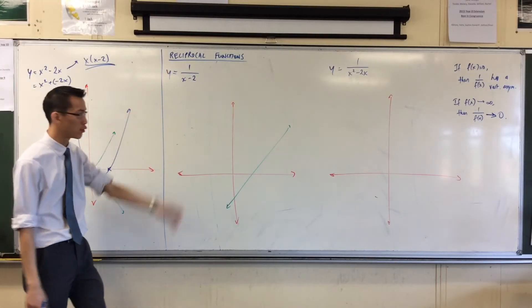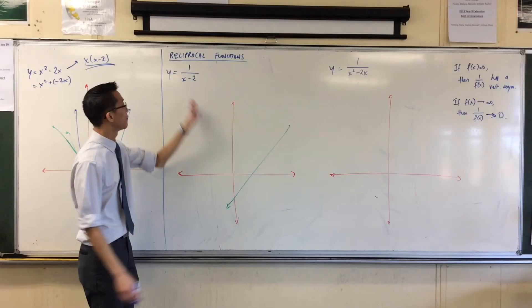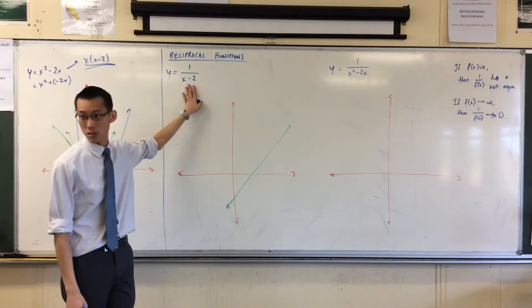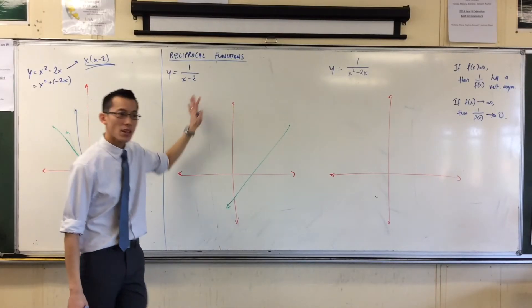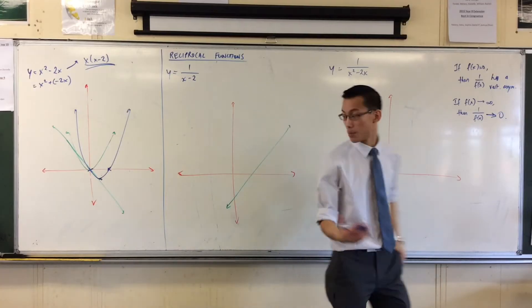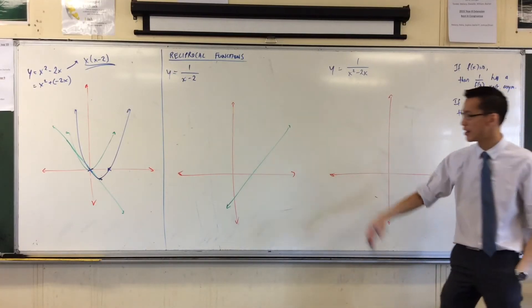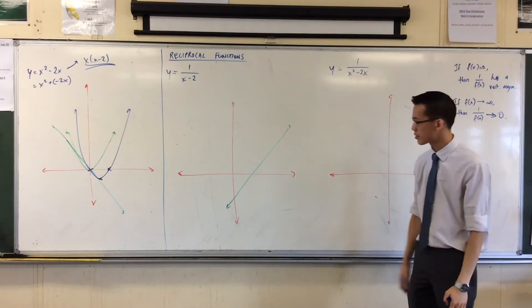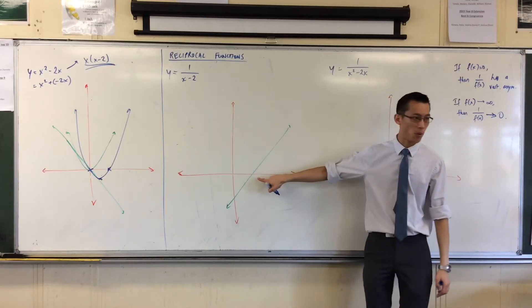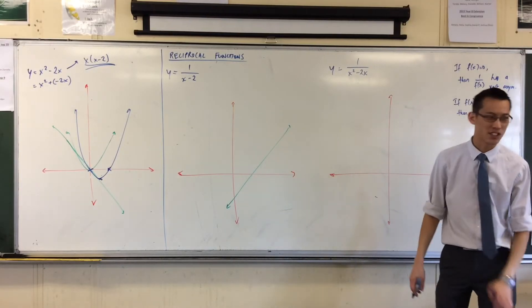Let's use those two very simple building blocks and have a go at this guy. y equals 1 over x minus 2. When you have a look at this, I've drawn x minus 2 as a component graph. So my reciprocal of this is going to have a look at these important points. Just clear here. That's good.